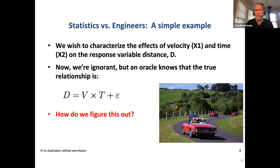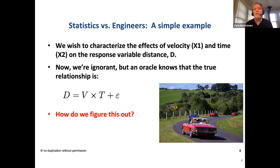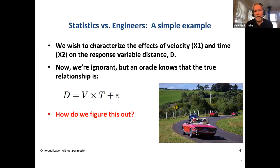Starting with a very simple example: we wish to characterize the effects of velocity (x1) and time (x2) on a response variable, distance. An oracle knows the true relationship is distance equals velocity times time. The statistician's approach uses DOE — with two factors, concerns about curvature and interactions, we run a central composite response surface design. We then fit a full second-order regression model, do subset selection, and find most terms drop out, yielding a prediction model: ŷ = 1.04 × x1 × x2, essentially velocity times time.